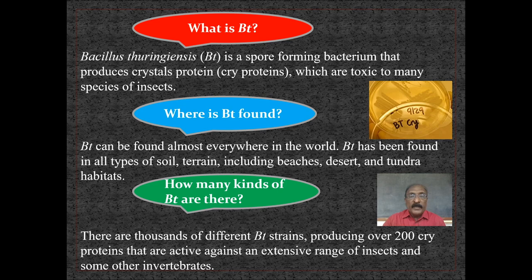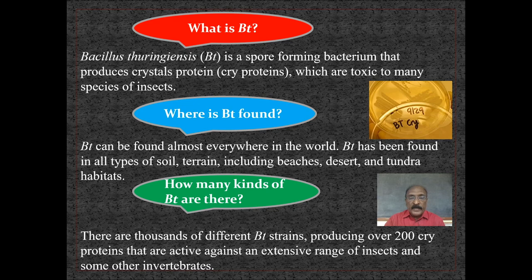Bt is Bacillus thuringiensis — a spore-forming bacterium that produces crystal protein, that is the cry protein, which is toxic to many species of insects. Bt can be found almost everywhere in the world, in all types of soil and terrain, including beaches, desert, and tundra habitats. There are thousands of different Bt strains producing over 200 types of cry proteins that are active against an extensive range of insects and some other invertebrates.